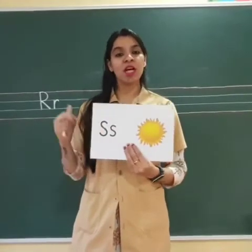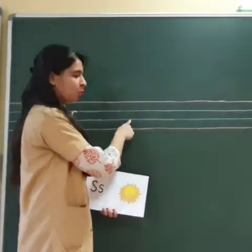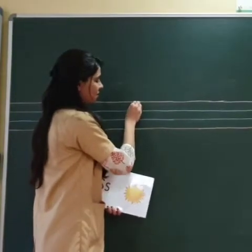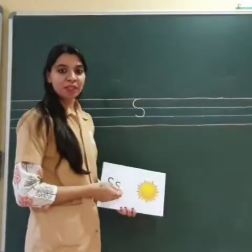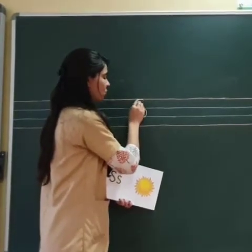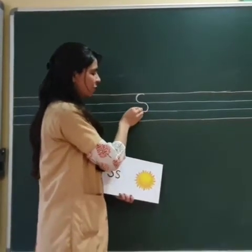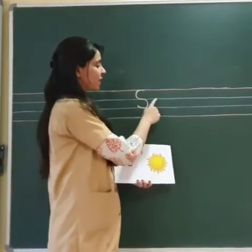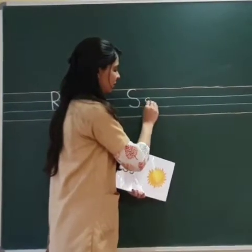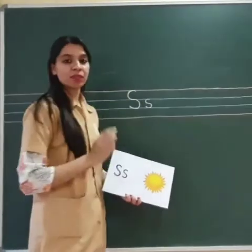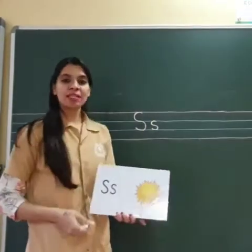Now let us see on the blackboard how do we write letter S. Here we have red and blue lines. We will start writing from the red line to the second blue line. This is a right curve to the first blue line, and then from here we continue — a left curve gives us capital S. Once again: right curve from the red line to the first blue line, and then a left curve from the first blue line to the second blue line gives us capital S. Now we will write small s between the blue lines in the same format — a small right curve and a small left curve gives us small s.